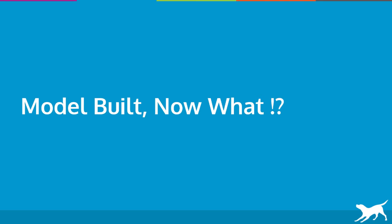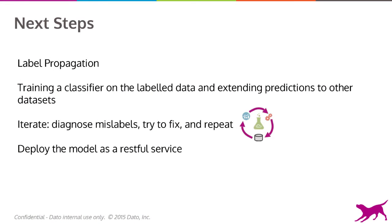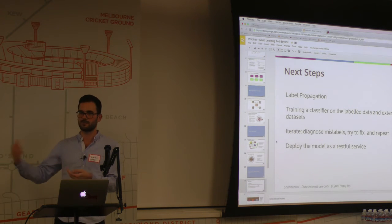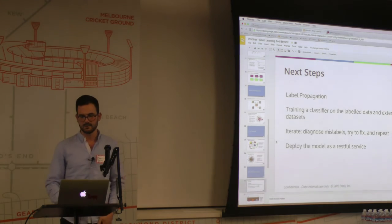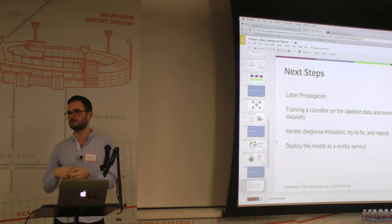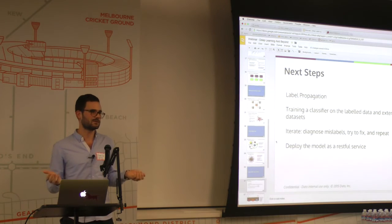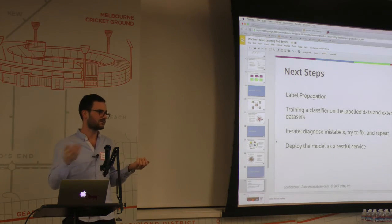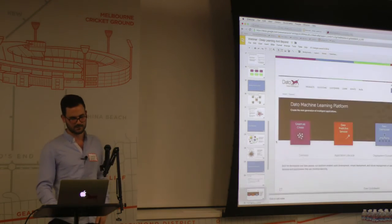That's the end of the demo. The next steps: this is a very simple model and I've assigned labels in a naive way. You could do label propagation on the subgraph, or build a classification model on the labels you've assigned with some confidence — measuring confidence from PageRank or similar. Then repeat, diagnose, find the errors, fix them. Finally, once you have something good, deploy that model as a service where people query with different images to get labels.